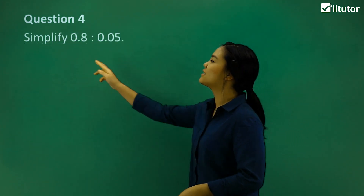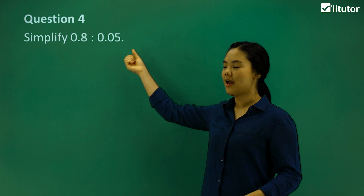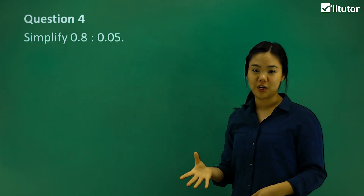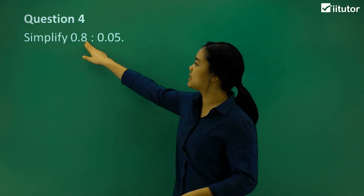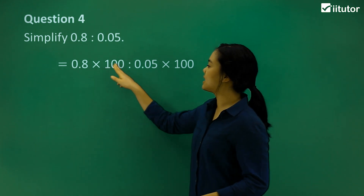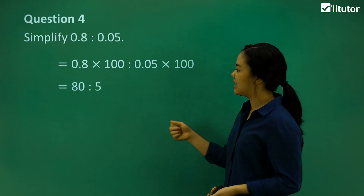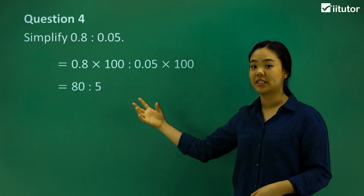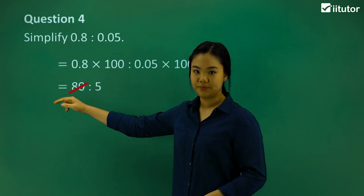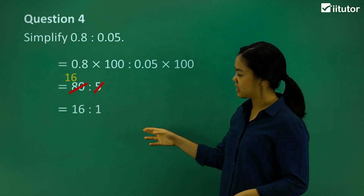Let's try question 4 — simplify 0.8 to 0.05. Now we have decimals, and it looks a bit tricky, but what we can do is make them whole numbers. We can't times by 10 because that's still a decimal, so it's 100. So 0.8 times 100 to 0.05 times 100 gives us 80 to 5. We're not quite there yet — they're both divisible by 5. 80 divided by 5 is 16, and 5 divided by 5 is 1, so the answer is 16 to 1.